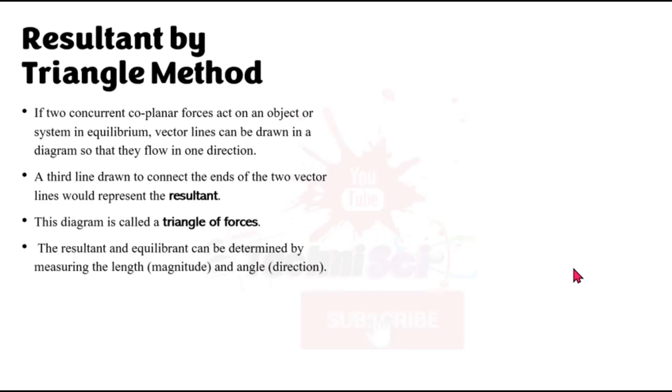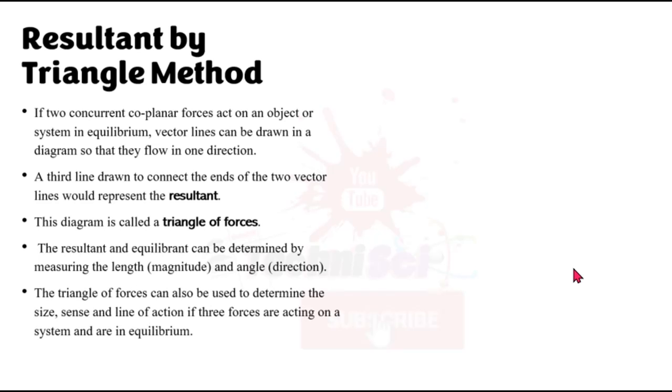The resultant and the equilibrant can be determined by measuring the length, which we know is the magnitude, and the angle, which would give us the direction. Remember, a force is a vector quantity. It is a vector. It must have a magnitude and a direction. The triangle of forces can also be used to determine the size, sense, whether it's a push or a pull, and the line of action if three forces are acting on a system and are in equilibrium. So it's not only to find the resultant, it can also be used if you have three forces and there's an unknown or there are two unknowns or whatever the case is, but the unknown would be like the magnitude, but you got the direction, right? So the triangle of forces can be used.